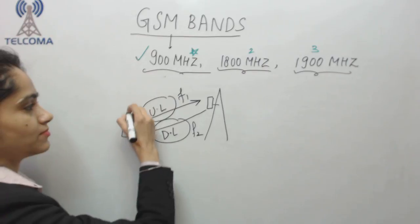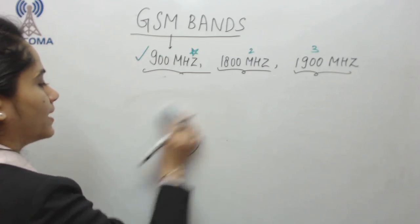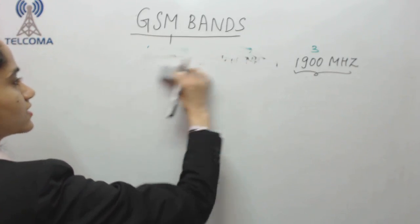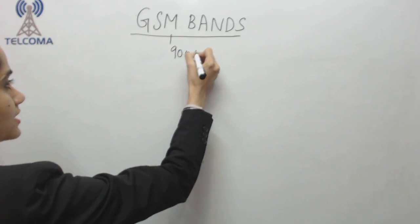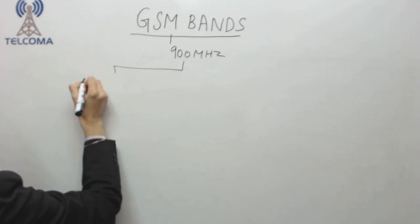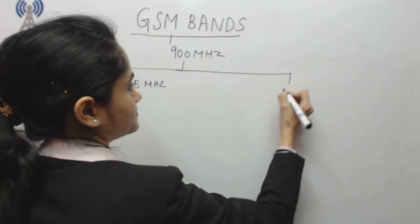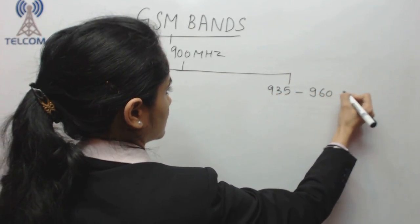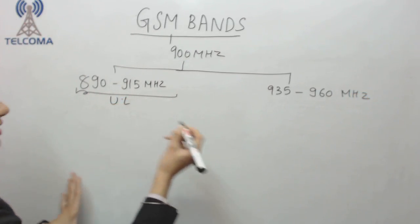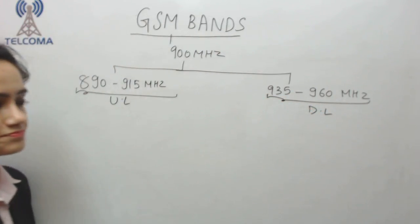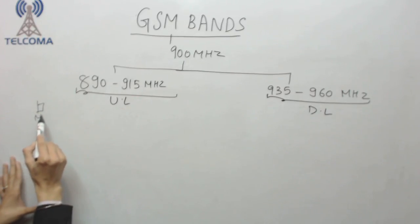All uplink signals pass through one frequency range (f1) and downlink signals through another (f2). For the 900 megahertz band, the uplink is 890 to 915 megahertz and the downlink is 935 to 960 megahertz.